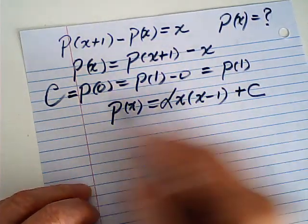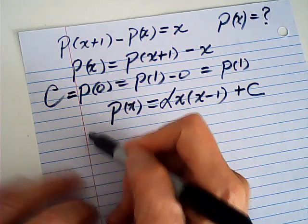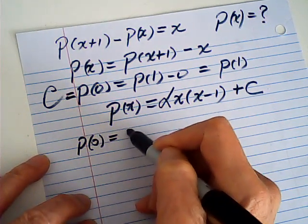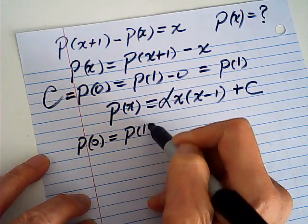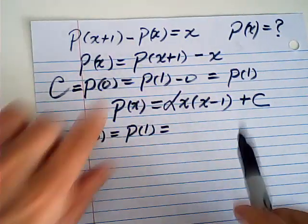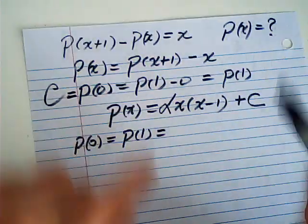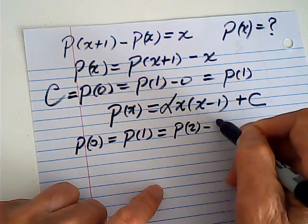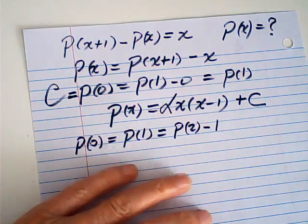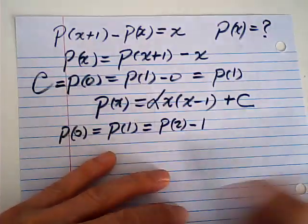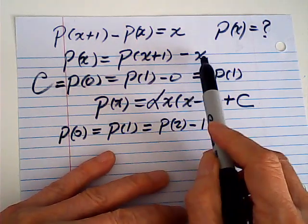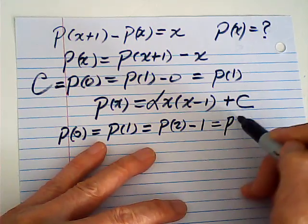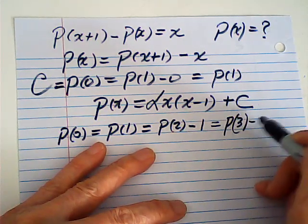Now from the given equation, P(0) is equal to P(1). And P(1) is P(2) minus 1. So it is equal to P(2) minus 1. And P(2) is P(3) minus 2. So this one is equal to P(3) minus 3.